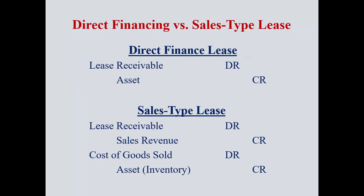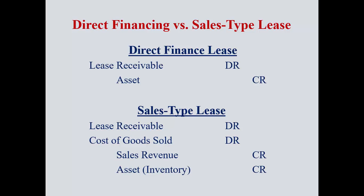Looking at the different journal entries to initially record these: for a direct finance lease, there's no additional revenue, so you just record a lease receivable and the asset. Over time, you'll record interest revenue. A sales type lease is different because you're selling it for more than you paid. The journal entry is presented with all debits first, then all credits — but it's still the same sales type entry.